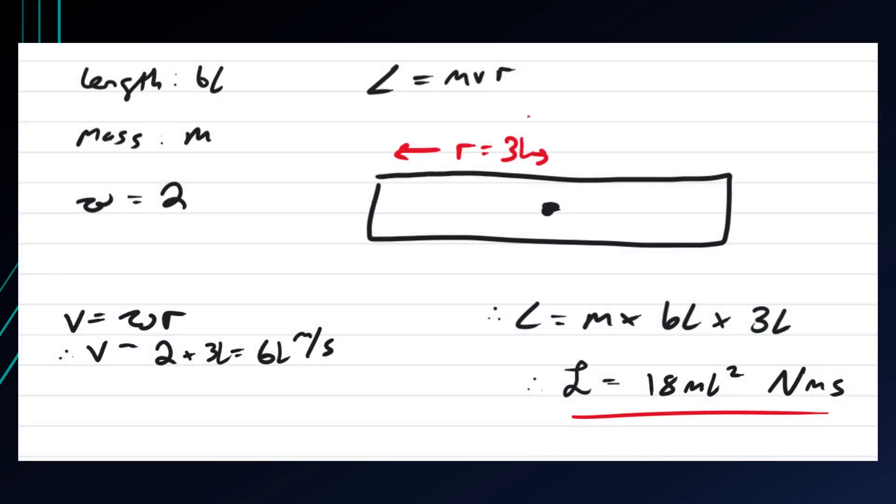So it's rotating about its midpoint, so therefore the radius at which an extremity point is rotating is 3l meters.